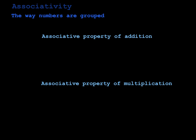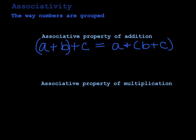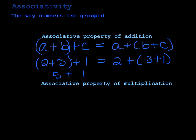The third property is associativity — we've got the associative property of addition and the associative property of multiplication, and that has to do with the way that numbers are grouped. The associative property of addition says that if I add (a plus b) plus c, that's the same as a plus (b plus c). For example, (2 plus 3) plus 1 equals 5 plus 1, which is 6, and that equals 2 plus (3 plus 1), which is 2 plus 4, still 6. The grouping doesn't matter when you're adding.